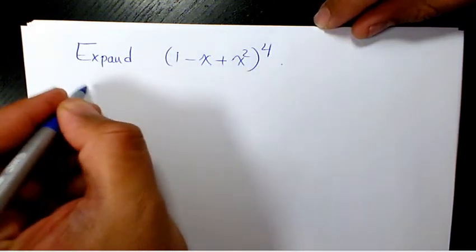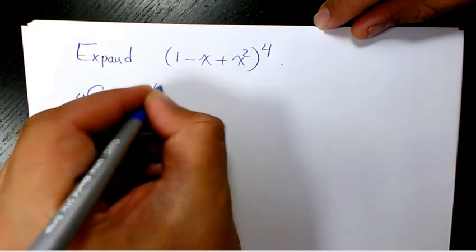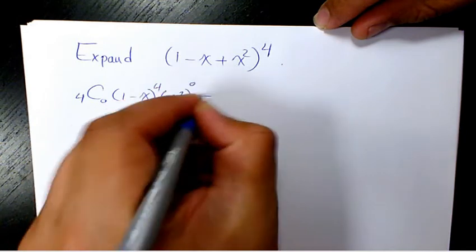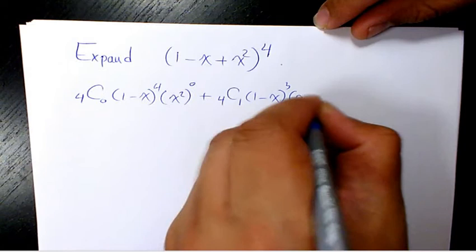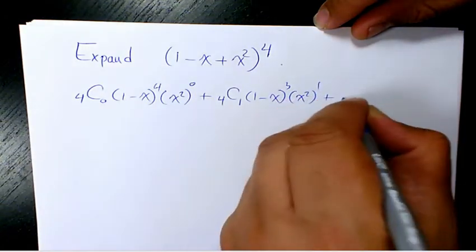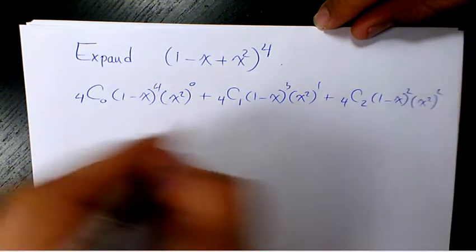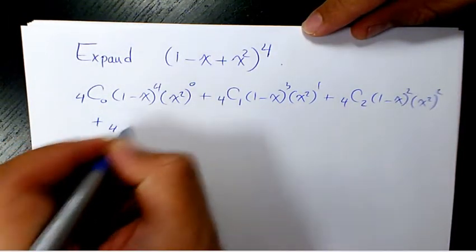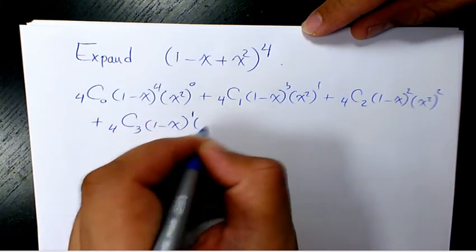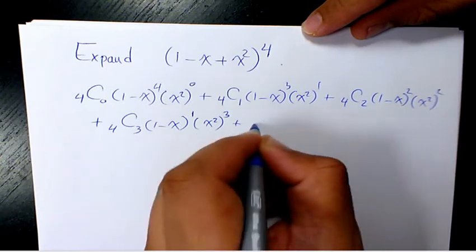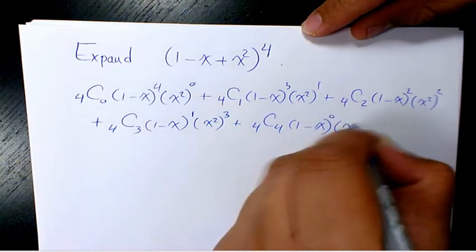So when we do that I'm going to have 4C0 times (1 minus x) to the power of 4 times x squared to the power of 0, plus 4C1 times (1 minus x) to the power of 3 times x squared to the power of 1, plus 4C2 times (1 minus x) to the power of 2 times x squared to the power of 2, plus 4C3 times (1 minus x) to the power of 1 times x squared to the power of 3, and finally 4C4 times (1 minus x) to the power of 0 times x squared to the power of 4.